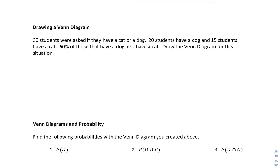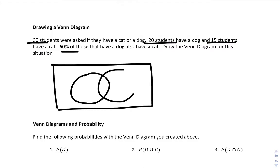All right. Drawing a Venn diagram. 30 students were asked if they have a cat or a dog. 20 students have a dog. 15 students have a cat. 60% of those that have a cat also have a dog. Draw a Venn diagram. All right. I'm going to underline the important information here. So this one is not mutually exclusive. You can have a dog and you can have a cat. So I'll do D for dog, C for cat. Whenever you have overlap, start in the middle right here.